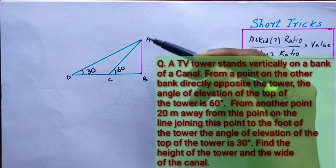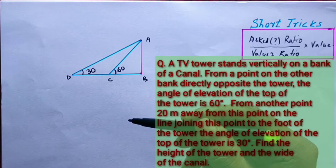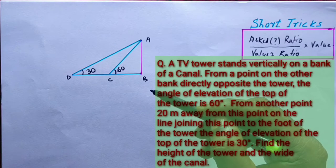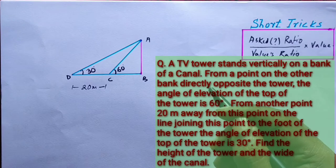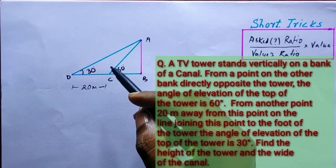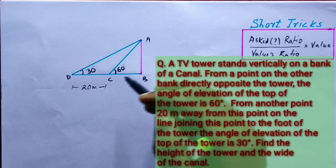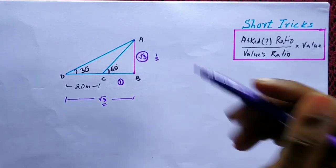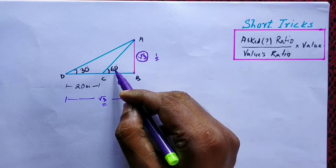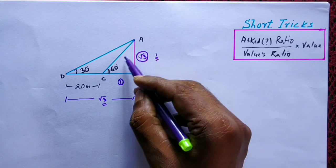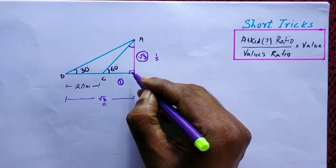Now we have a question: A TV tower stands vertically on a bank of a canal. From a point on the other bank directly opposite the tower, the angle of elevation of the top of the tower is 60°. From another point 20 meters away from this point on the line joining this point to the foot of the tower, the angle of elevation of the top of the tower is 30°. Find the height of the tower and the width of the canal. For the small triangle ABC with 60°, we write the ratio — opposite 60° is √3, circled. The other angle will be 30°, giving 30 + 60 + 90 = 180°.